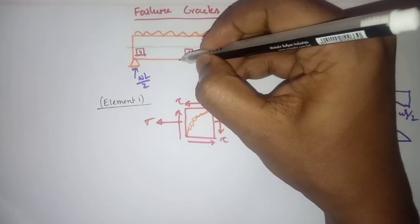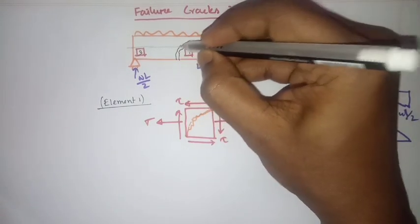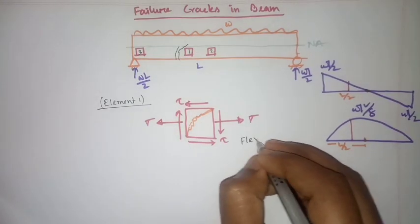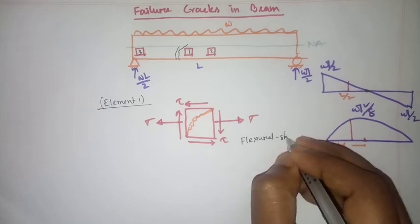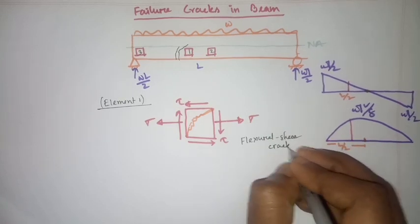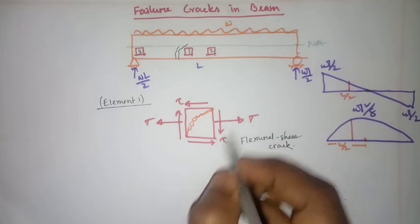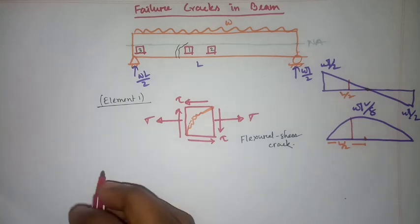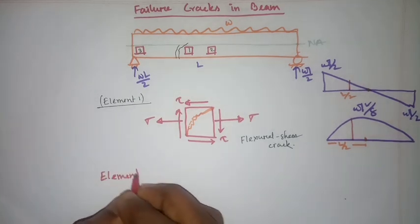This kind of crack is called a flexure-shear crack. This is due to both bending and shear stresses acting simultaneously. Now for element two — here at the mid-section.